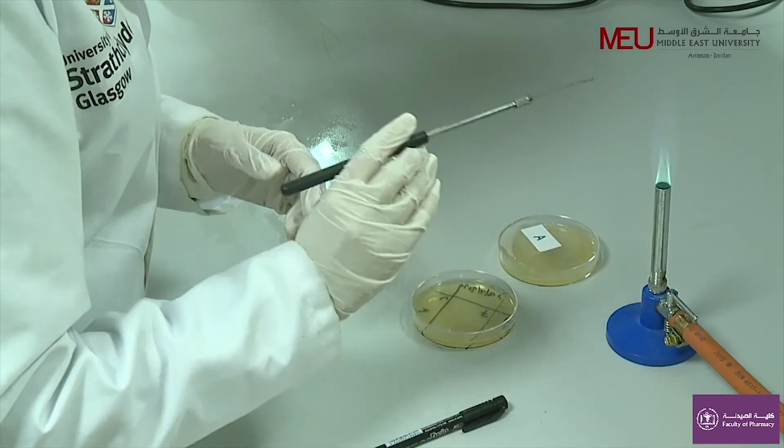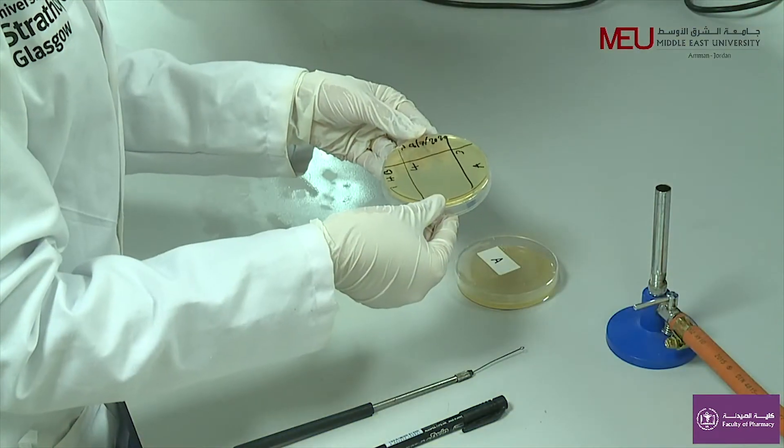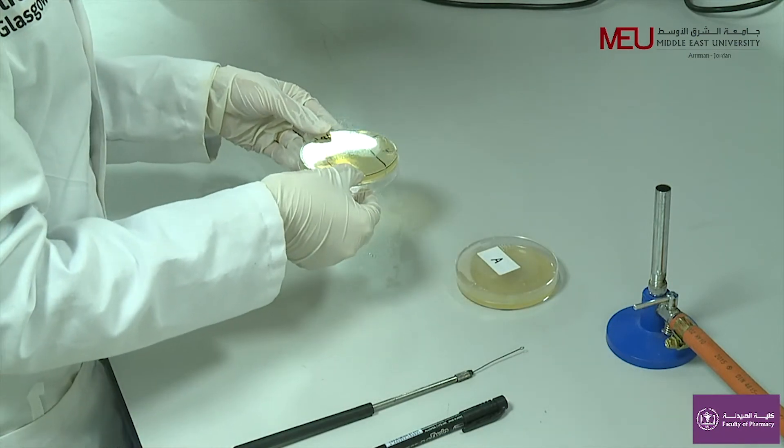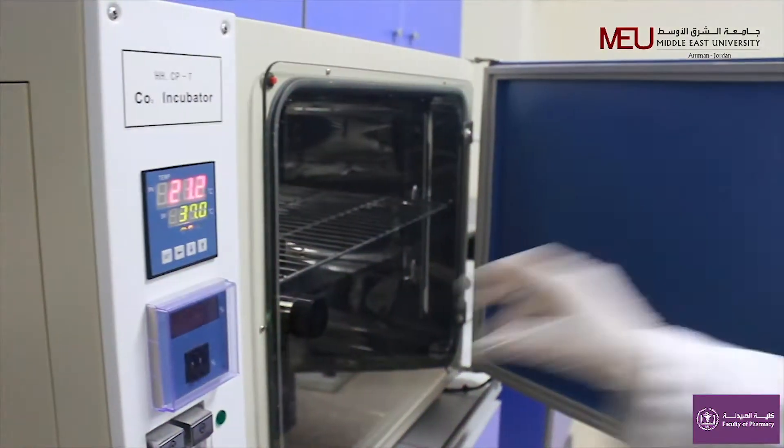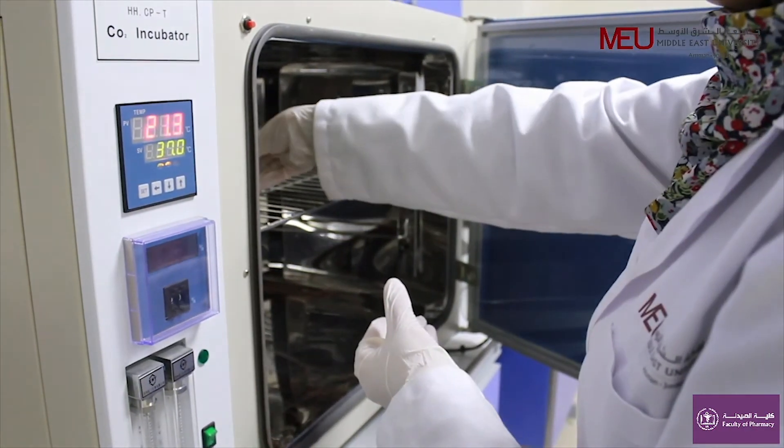Finally, flame the loop to disinfect it and leave it on the bench. Put the agar plate in the incubator for 24 hours. Remember to place the plates inverted in the incubator and set it at room temperature.